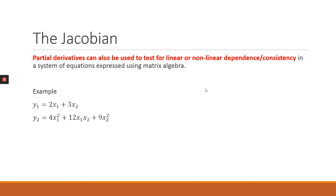As an example, if you are given two functions, we can see that equation two is nonlinear because X1 is raised to the power of two as well as X2 is raised to the power of two. Looking at this, we cannot put the two functions in matrix notation in the linear way — that is, establishing our AX equals D equation. So how are we going to test for nonlinear dependence or consistency?